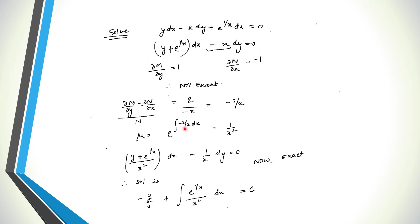To summarize the procedure: since the equation is not exact, we find the difference (∂M/∂y − ∂N/∂x). We then divide either by N or by M. If dividing by N gives a function of x alone, the integrating factor is e to the power of the integral of that expression dx. If dividing by M gives a function of y alone, the integrating factor is e to the power of the integral of minus g(y) dy.